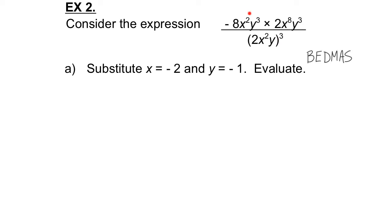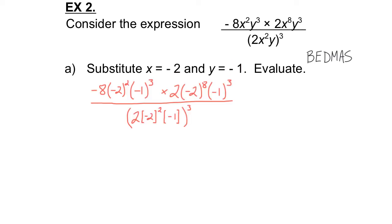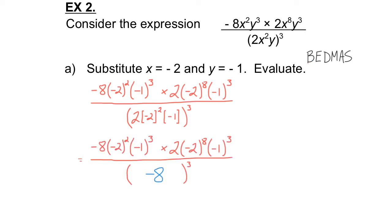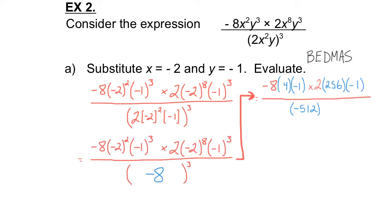Following the order of operations — BEDMAS — I'll substitute x as negative 2 and y as negative 1. Brackets first, then all the exponents, then division and multiplication in the order they appear. Once I do that, I end up with my answer.